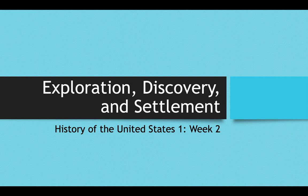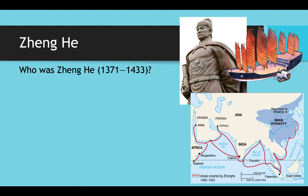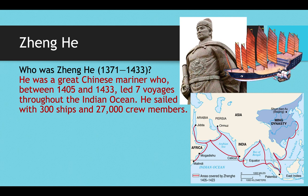We're actually going to start today's lecture in an unexpected place: China. The first person to learn about is a guy named Zheng He. Zheng He was a Chinese mariner — a great mariner and voyager — who between 1405 and 1433 led seven voyages throughout the Indian Ocean. He lived at the time of the Ming Dynasty, and you can see on the map all of the places that he traveled to.